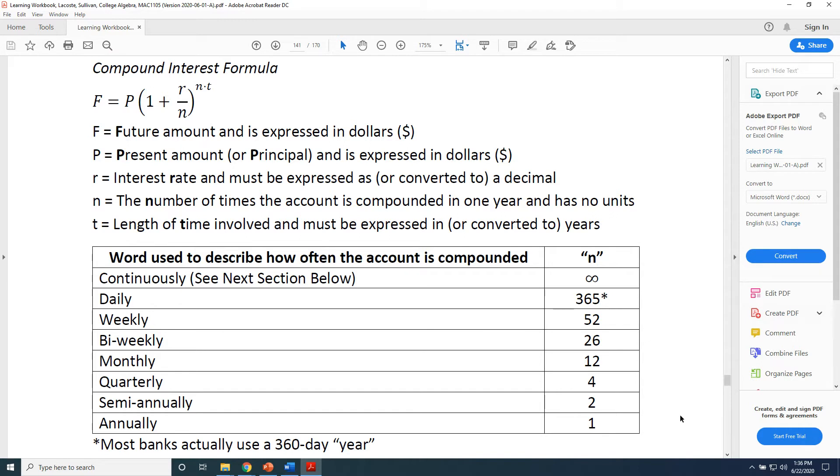Now there's another version of this formula that starts with A equals instead of F equals. But the reason why I have chosen to use the F equals formula is because I have found that it makes it easier for students to know where to put which numbers. F for future, P for present makes it very clear which number goes where.